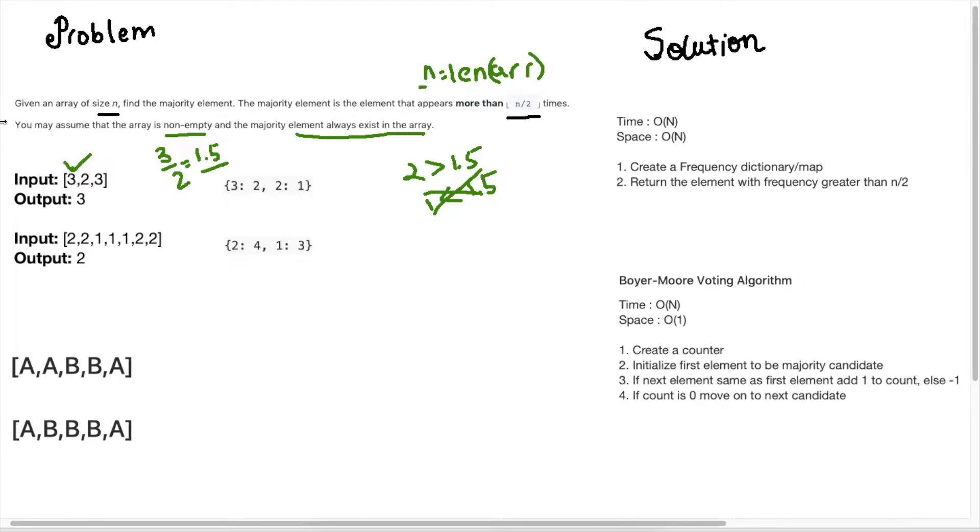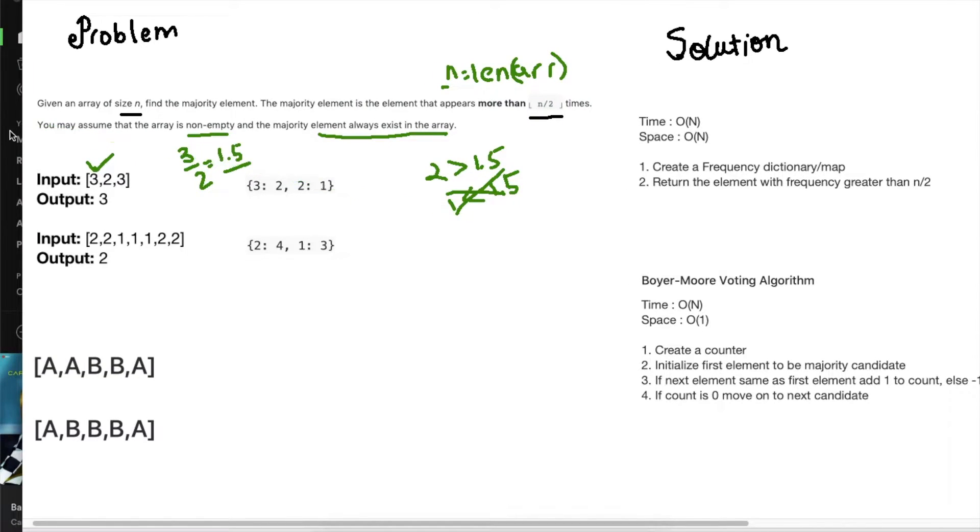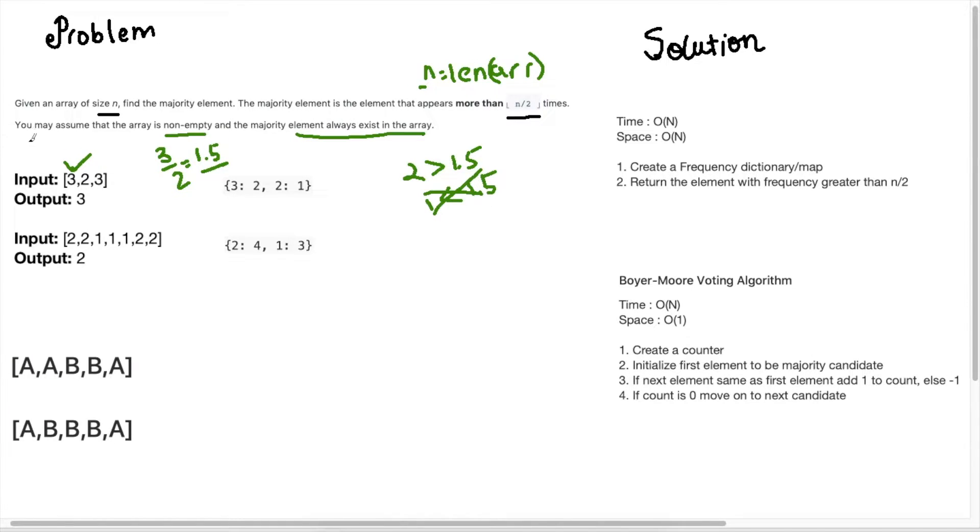And this is really important for this question. So this is really important when they say that you may assume that the array is non-empty and the majority element always exists. So these are the exception conditions that we don't need to check for in this question. And they're telling us that yes, there will be an element that qualifies for this condition. Okay, so yeah, let's look at some solutions and discuss how we can solve this problem.